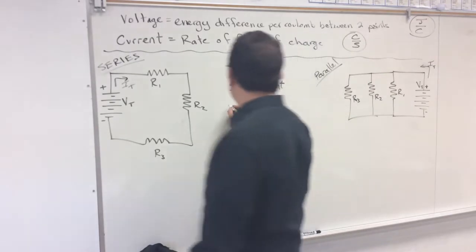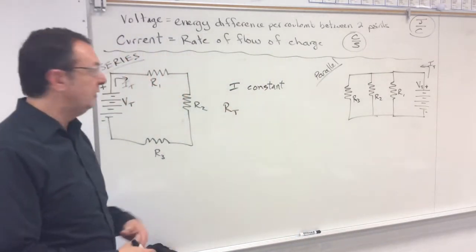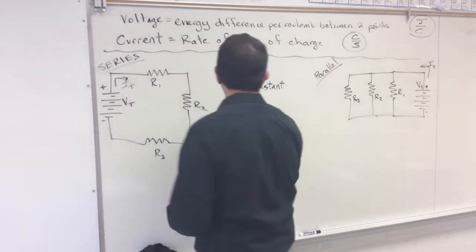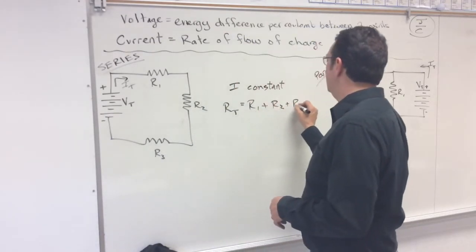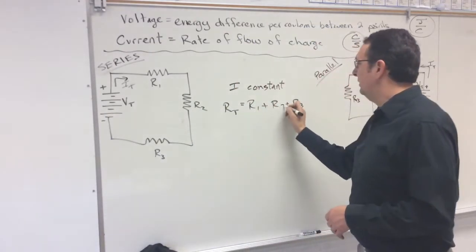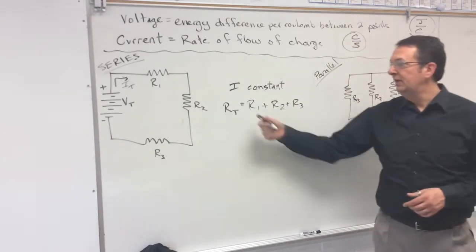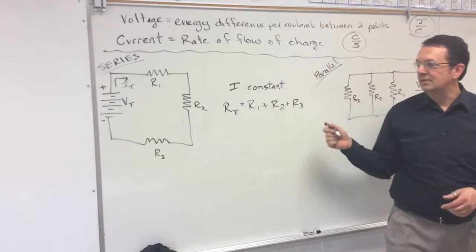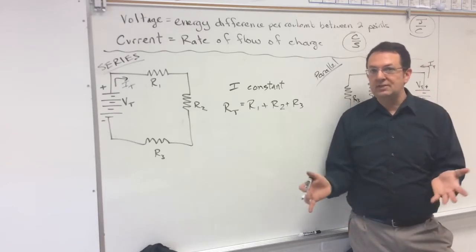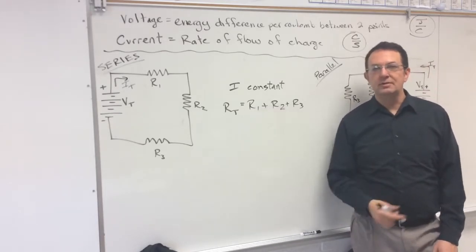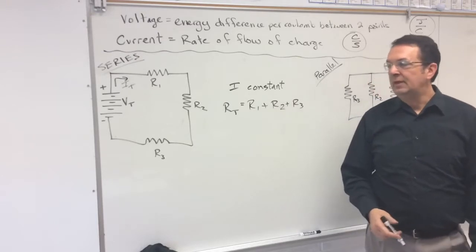The resistance in series is also a pretty simple relationship. The total resistance — the equivalent resistance of the whole circuit — is just a simple sum: R1 plus R2 plus R3. However many resistors you have, whether 2, 3, 4, 5, or 17, you just add them up to get the total resistance. Resistance, of course, is in ohms.